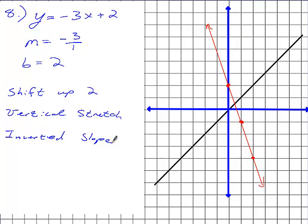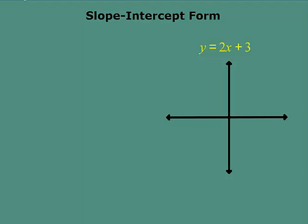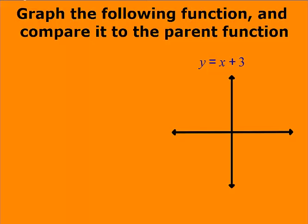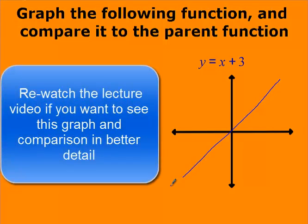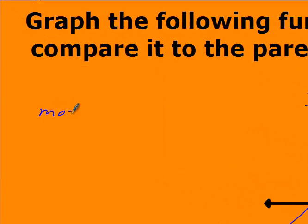It depends — there might only be one change. Like yesterday, what we looked at was: you have your parent function, and then this one moves like that. The slopes are still exactly the same, so there's no horizontal stretch or vertical stretch. The only thing that changed is we took the parent function and moved it up three units — so that would be the only thing you would put down. The only change was: move up three. So it really depends on each graph — there might only be one thing to put down, or there might be up to three, but there won't be more than that.